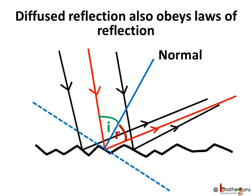And we also measure the angle of reflection, which is angle R — the angle between the normal and the reflected ray. So, what do we find? We will see that angle of incidence is equal to angle of reflection.